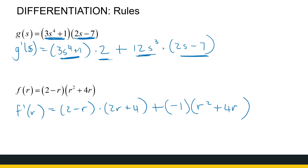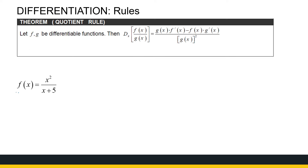Similarly, if I've got the quotient of two functions — here f(x) is x squared divided by (x plus 5) — the derivative of the quotient is not the quotient of the derivatives; I can't just take the derivative of the top and divide by the derivative of the bottom. We have what we call the quotient rule. The denominator is g(x) squared, so whatever is at the bottom stays squared, and the top becomes g times the derivative of f, minus f times the derivative of g.